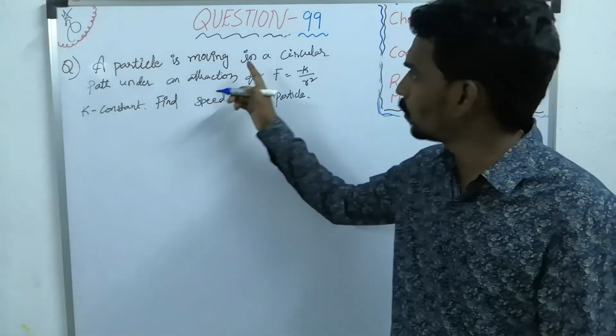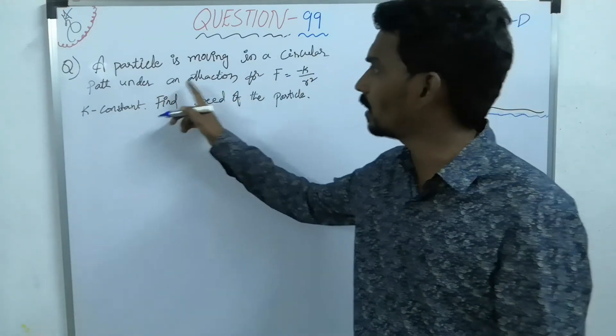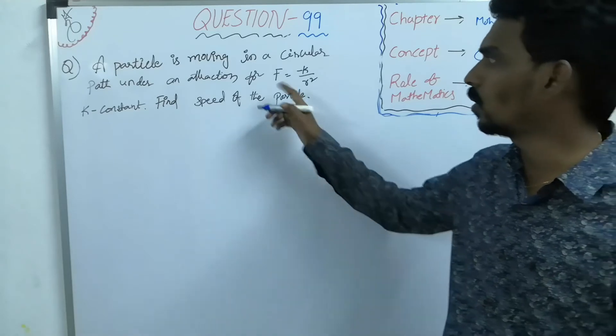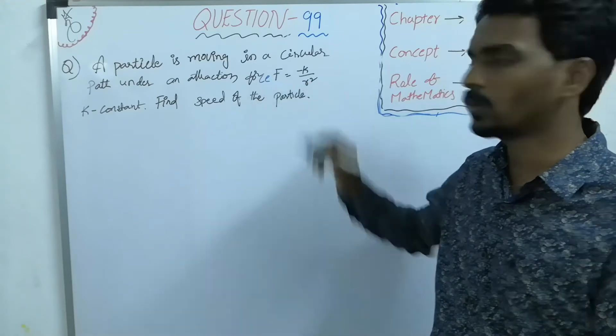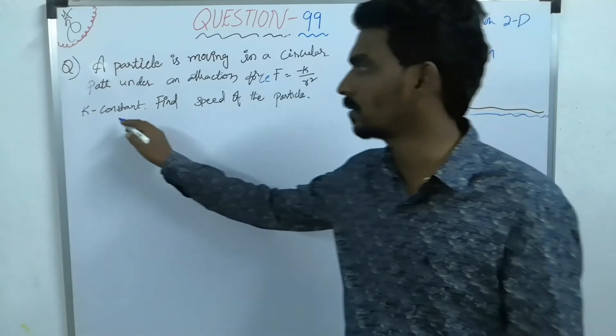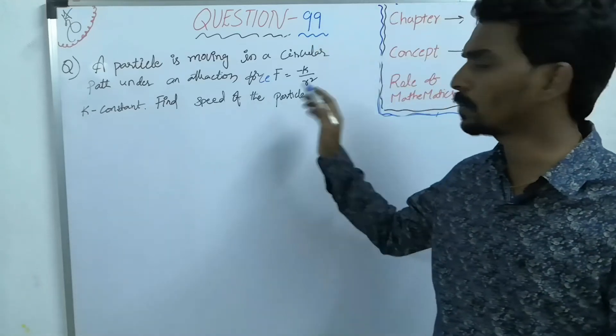A particle is moving in a circular path under an attraction force f equal to minus k by r square where k is constant. Find speed of the particle.